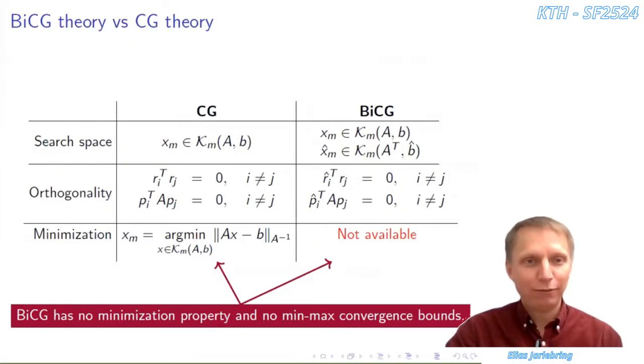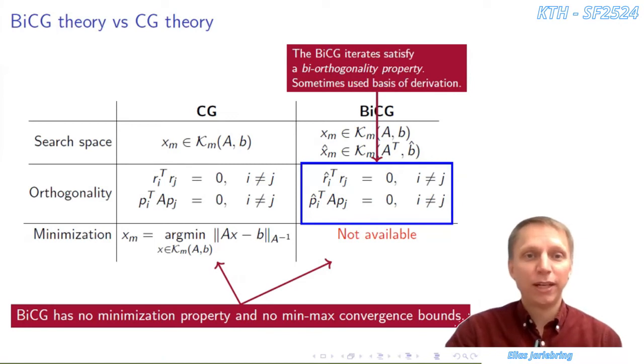Since BiCG can be derived from CG, it shares some of its properties. Unfortunately, there's no nice convergence theory as we have in CG. But we do have an orthogonality property in CG, which carries over to an orthogonality property in BiCG. It's a bi-orthogonality property.